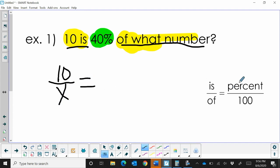Equals, and we put our percentage, which is just 40, over 100, because that's what the formula is. So that's how we set it up. The is over the of is equal to the percentage over 100.